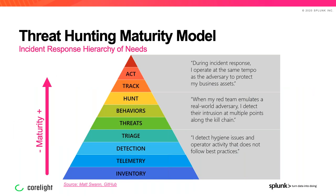Incident response is a more reactive approach to respond to threats that were already found, while threat hunting is a proactive approach that might trigger incident response depending on what is found — for example, if something suspicious or malicious is detected. We can consider hunting as part of the incident response process, as represented in this pyramid: the incident response hierarchy of needs describes the capabilities organizations must build to defend their business assets.